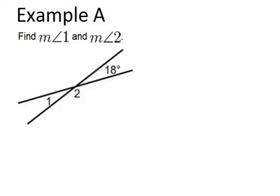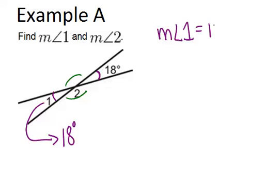For example A, it says find the measure of angle 1 and the measure of angle 2. In this picture, we see two intersecting lines, and the angles that are vertical angles in this picture are angle 1 and the 18 degree angle. Angle 2 would be a vertical angle with this angle over here. Vertical angles are always congruent, so since this angle is 18 degrees, angle 1 also has to be 18 degrees. So our first answer is the measure of angle 1 equals 18 degrees.